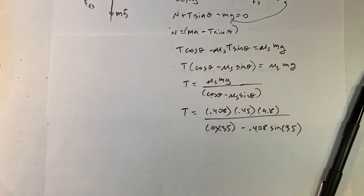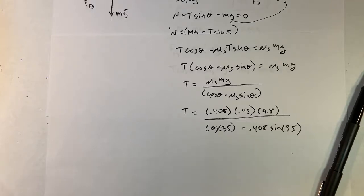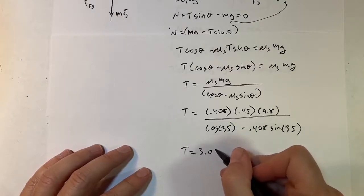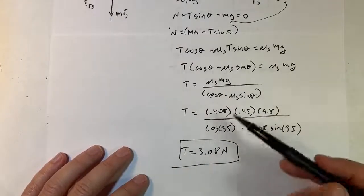Plugging in values: T equals 0.408 times 0.45 times 9.8, divided by cosine(35°) minus 0.408 times sine(35°). If your calculator is in radians mode, convert 35 degrees as 35 times pi divided by 180. Computing this, I get T equals 3.08 newtons. So it takes a greater force to pull it at this angle. It would be fun to do this numerically, finding the needed tension as a function of angle and finding the optimal angle.